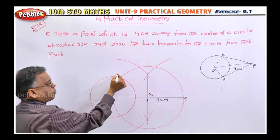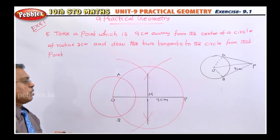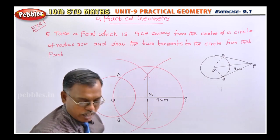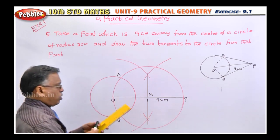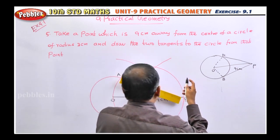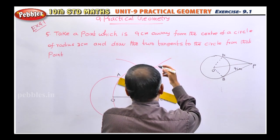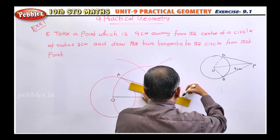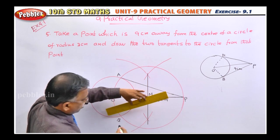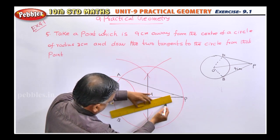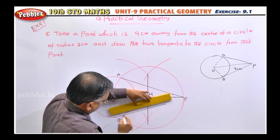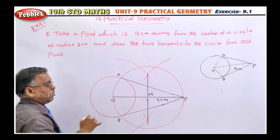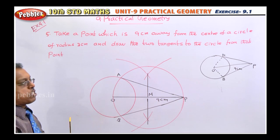The larger circle cuts the smaller circle at points A and B. After that, it is very easy — draw PA and PB. Those are your required tangents. PA and PB should be drawn like this. This is PA, one tangent. Similarly, PB should also be drawn. So PA and PB are the required tangents — that's what is asked.